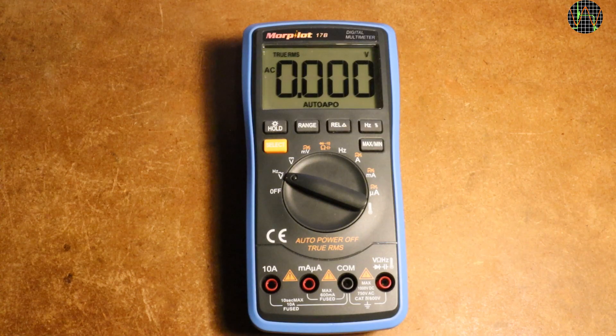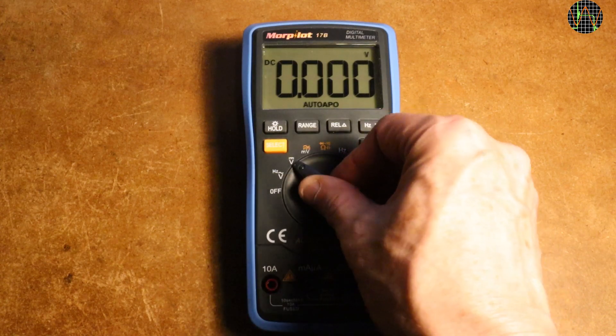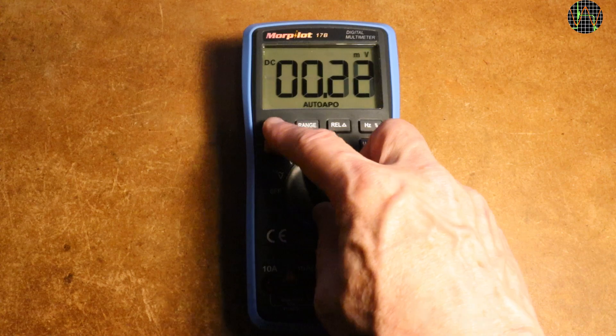Feature-wise, the Morpilot is very well equipped. It has millivolts, max/min, rel, hertz or duty cycle, and manual and auto range. The only thing I miss is a bar graph.